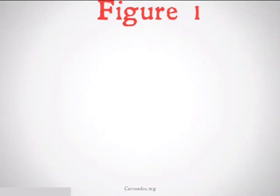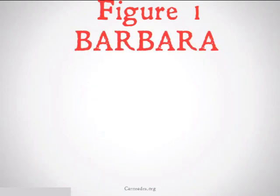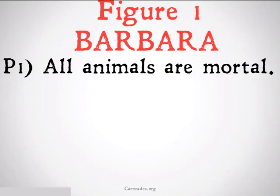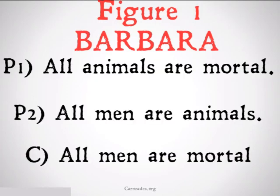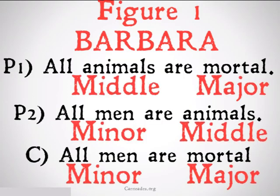A famous example of a valid Figure 1 is known as the Barbara. It's called the Barbara because there are three A's in the word, and it's a 3A categorical syllogism. It goes: all animals are mortal, all men are animals, therefore all men are mortal. We note that this is a Figure 1 because of that diagonal we see between the middle terms.